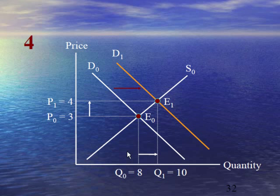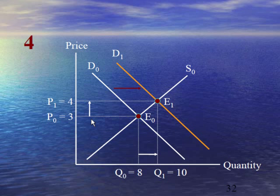Case number 4 explains that there is no shift in supply, but demand rises or demand increases. As a result, the demand curve shifts from D₀ to D₁ and the equilibrium point moves from E₀ to E₁, where the new demand curve D₁ intersects the supply curve S₀. Due to this shift in equilibrium, the equilibrium price moves from 3 to 4 and equilibrium quantity increases from 8 to 10.